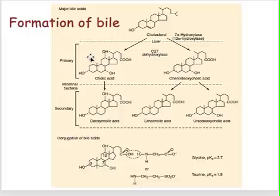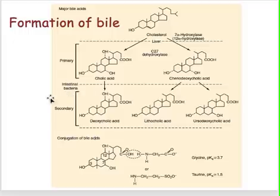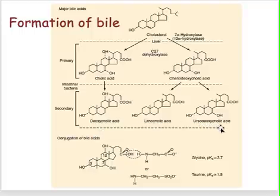When your primary bile acid reaches your intestine, it's acted upon by intestinal bacteria to become your secondary bile acid: your deoxycholic acid, your lithocholic acid, and your ursodeoxycholic acid.